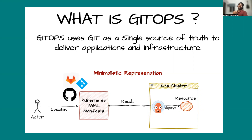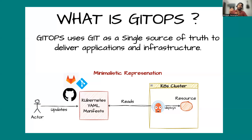So let's start without wasting any time. What is GitOps? GitOps uses Git as a single source of truth to deliver applications and infrastructure. Now this is a textbook definition — I can break this down and explain it — but before that I would like to explain the 'why' aspect of GitOps.